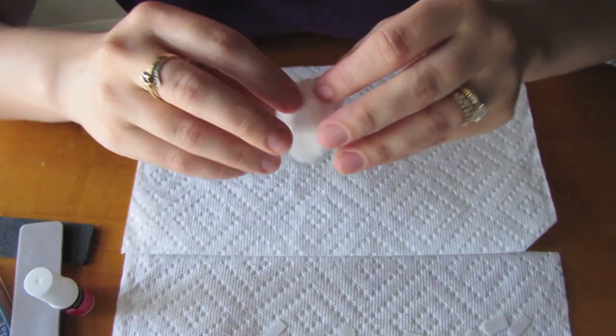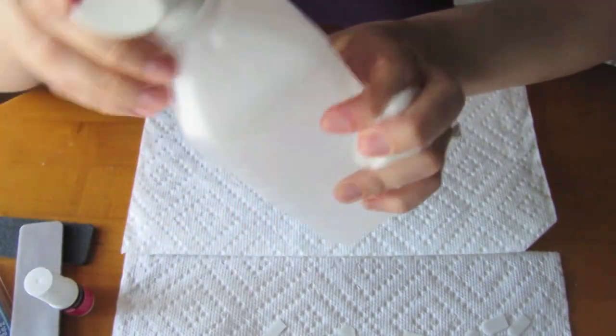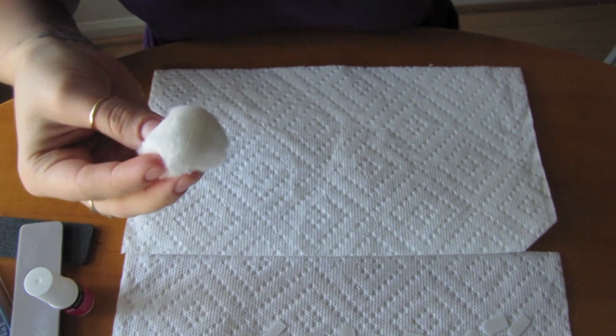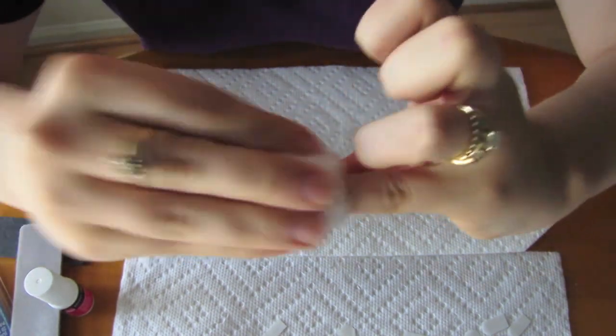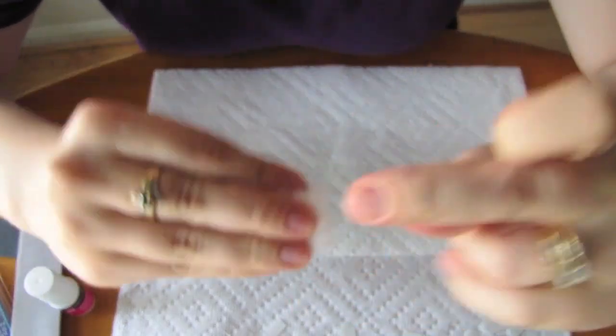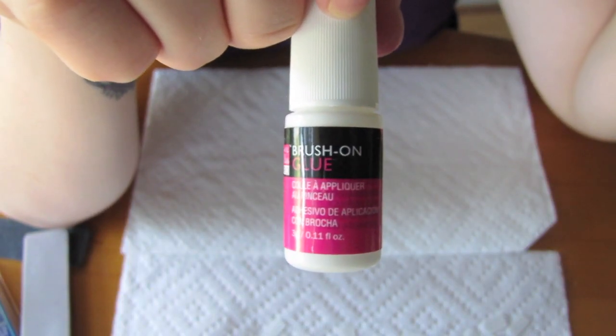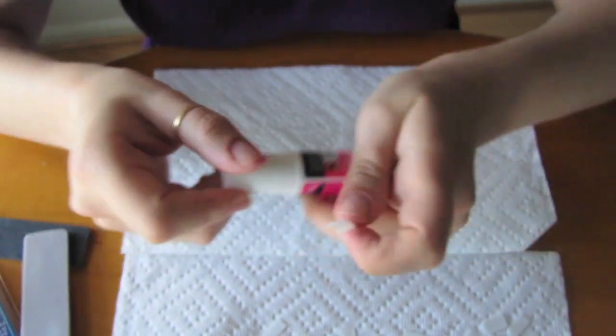Before I start, I'm just going to take some alcohol just to make sure there's no oils or dirt on my nails. And I'm using Nail Bliss Pro Brush On Glue to apply my tips.